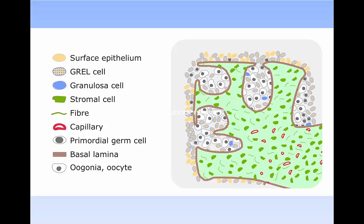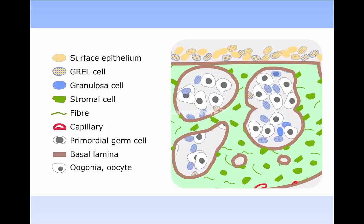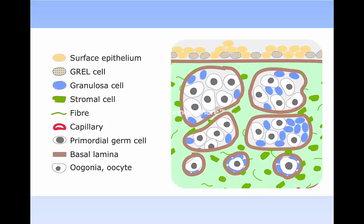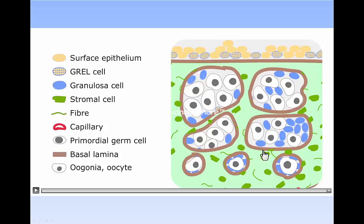It's about at this stage that the GREL cells on the surface begin the transformation into an epithelium. Eventually, the stroma completely separates the GREL cells on the surface from the underlying ovigerous cords, and the cords then become closed, whereas previously they were open to the surface.